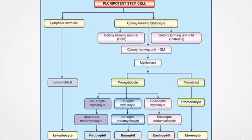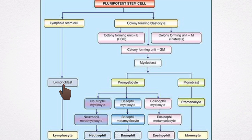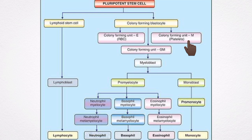Leukopoiesis is the development and maturation of leukocytes. Committed pluripotent stem cells give rise to leukocytes through various stages. The pluripotent stem cells give rise to two types of cells: lymphoid stem cells and colony-forming blast cells. The lymphoid stem cells give rise to lymphoblasts, which eventually give rise to lymphocytes. The colony-forming blast cells give rise to colony-forming unit erythrocytes, colony-forming units granulocytes and monocytes, and colony-forming unit megakaryocytes.